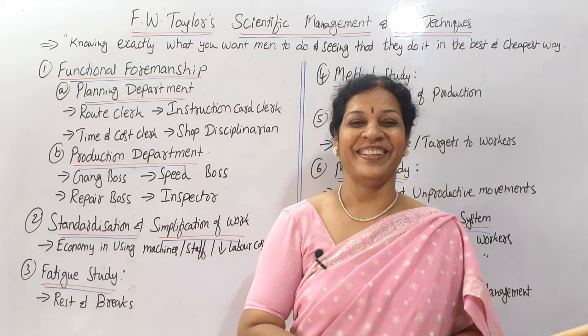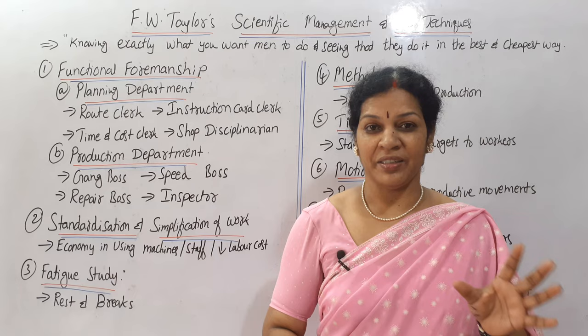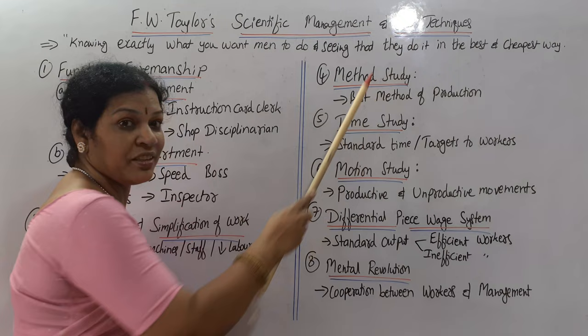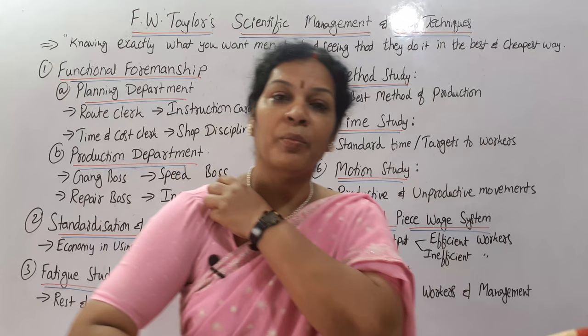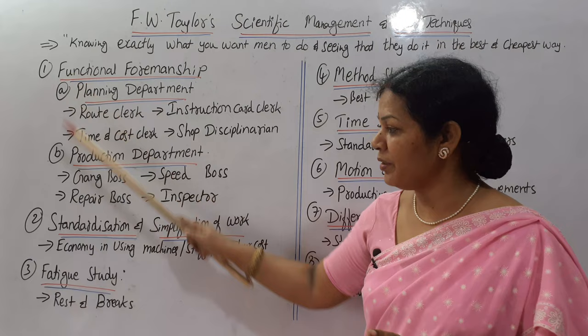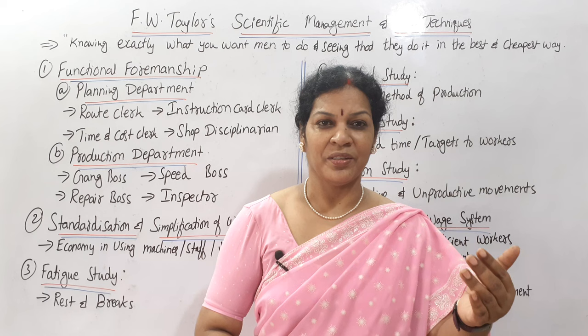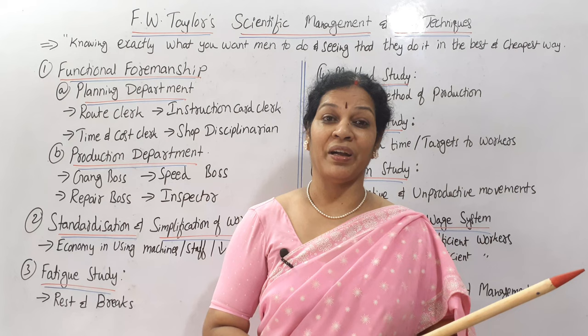Now coming to today's class — scientific management by FW Taylor. FW Taylor's scientific management and its techniques. Total, how many techniques are there? Total eight techniques are there. These eight techniques are going to give you different practical ideas, modernization, and implementing new methodologies. That kind of new ideas you can find in these areas.